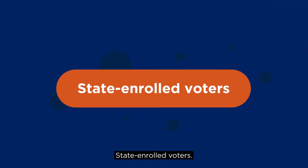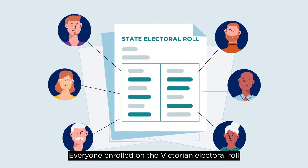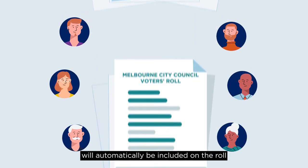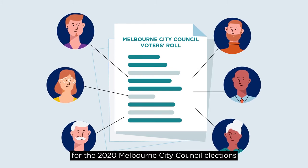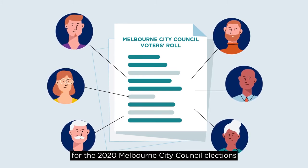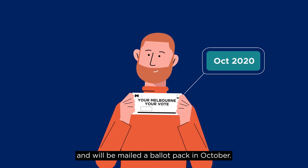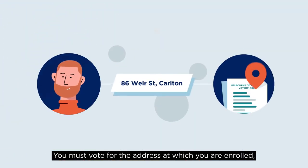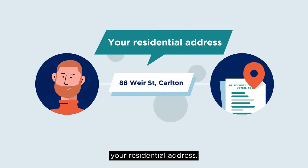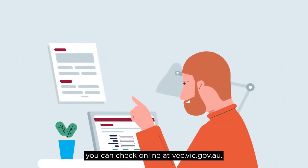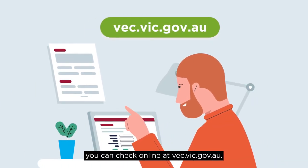State enrolled voters: Everyone enrolled on the Victorian Electoral Roll within the City of Melbourne will automatically be included on the roll for the 2020 Melbourne City Council elections and will be mailed a ballot pack in October. You must vote for the address at which you are enrolled — your residential address. If you're not sure if you're enrolled, you can check online at vec.vic.gov.au.